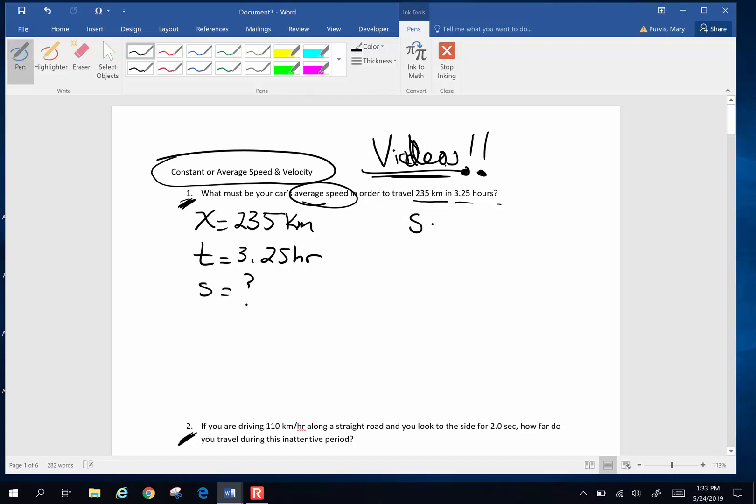The very first homework problem says this: What must be your car's average speed in order to travel 235 kilometers in 3.25 hours? Now step one, you read through the problem and write down what you know. 235 kilometers, let the units be your helpers tell you what you know. That is a displacement.